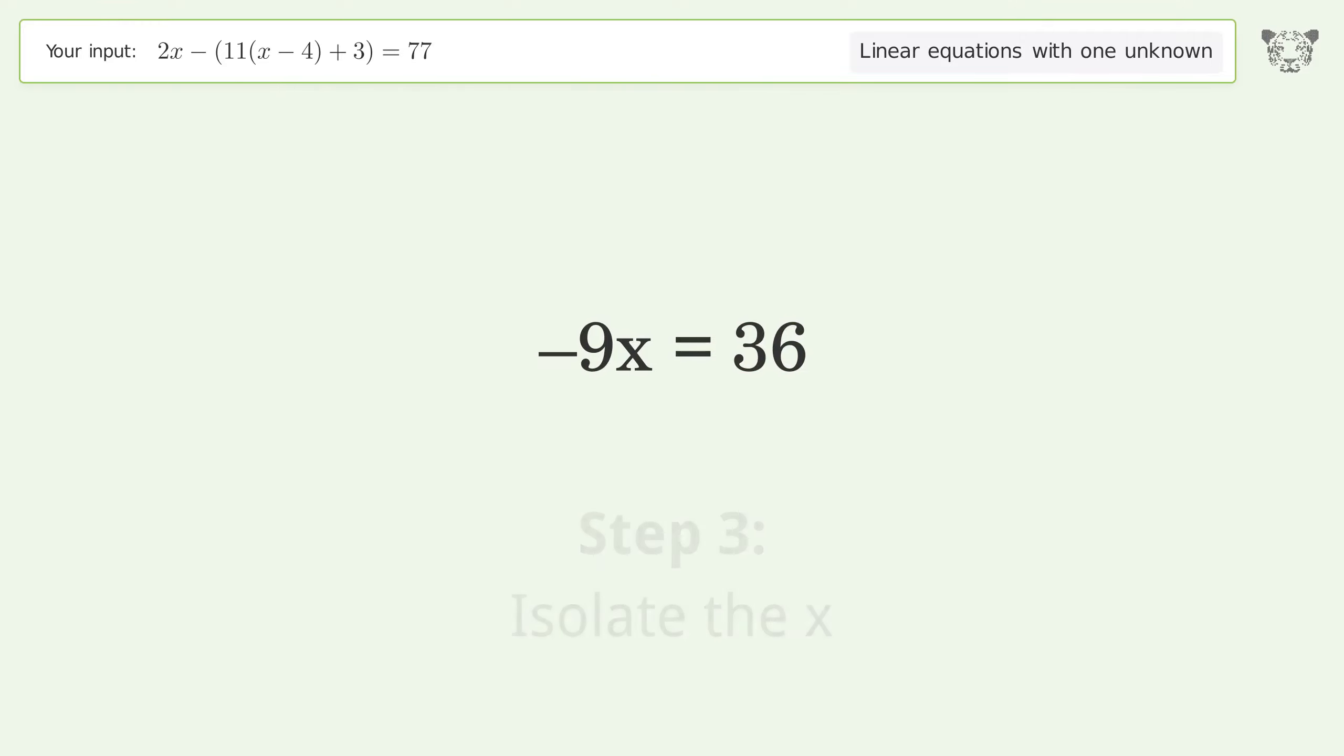Isolate the x. Divide both sides by negative 9, cancel out the negatives.